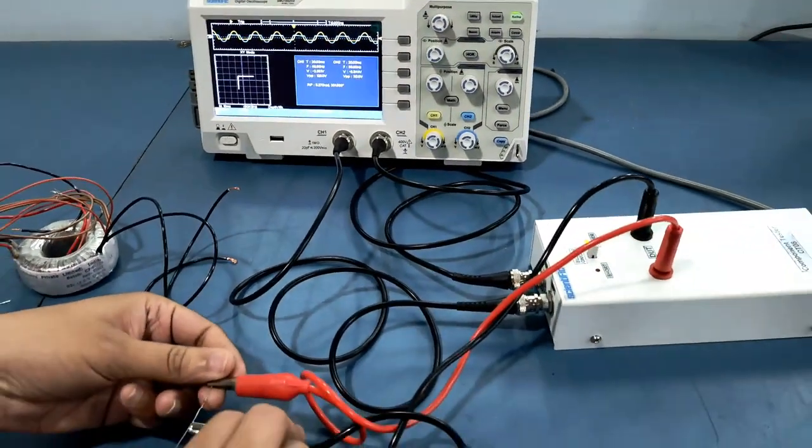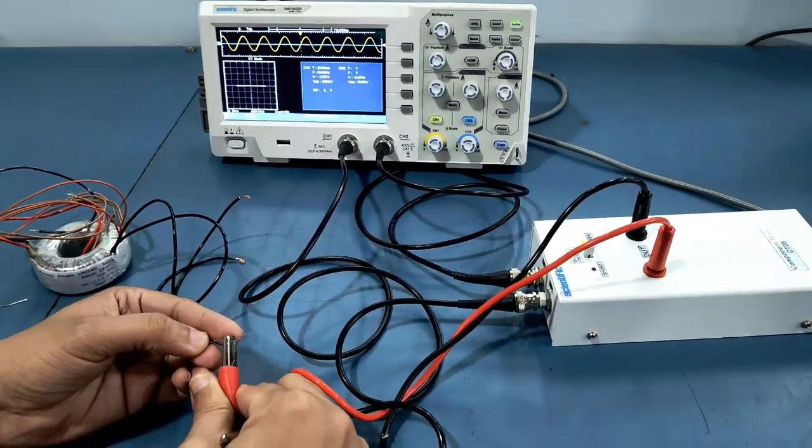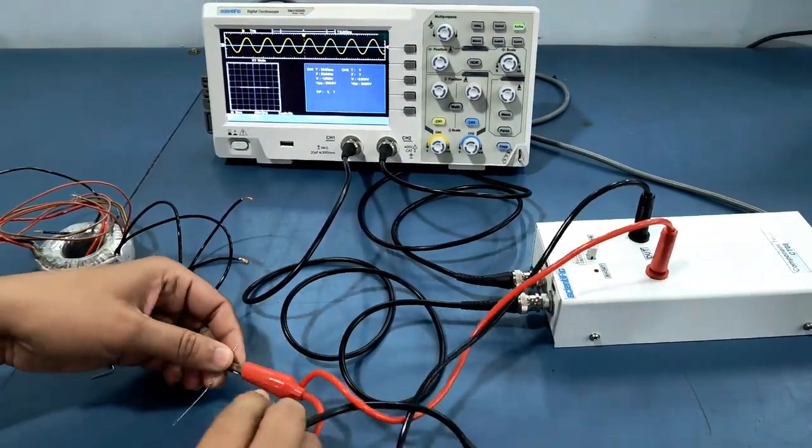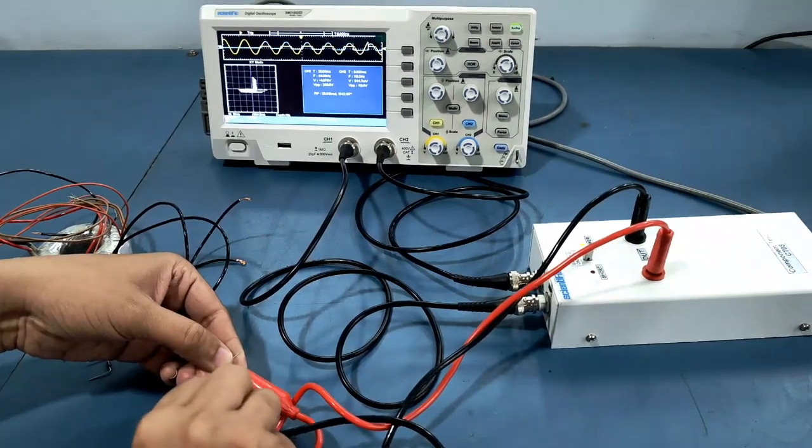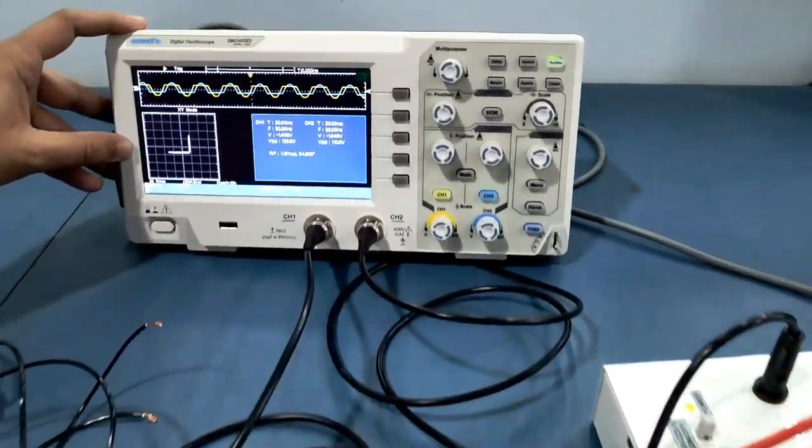Now we will check the Zener diode in reverse direction. Again, the pattern appears on the DSO.